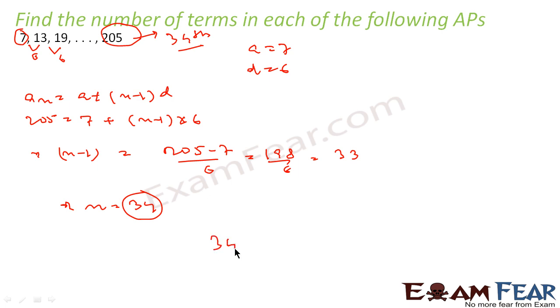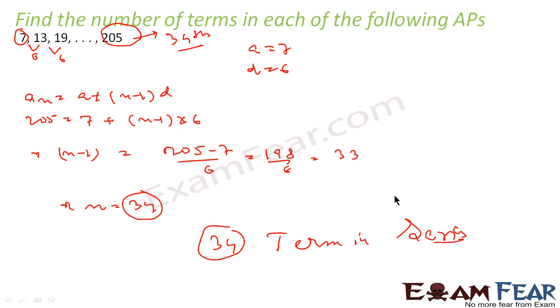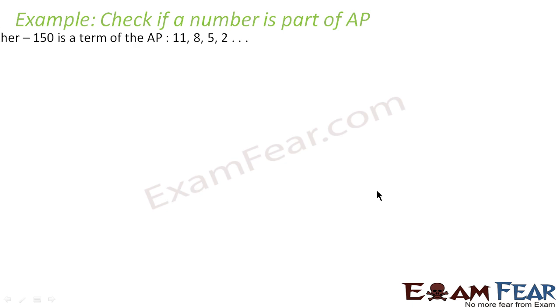So there are 34 terms. This is the 34th term and it is the last term. It is simple — we had an, we had a, we had d, and we found the value of n.